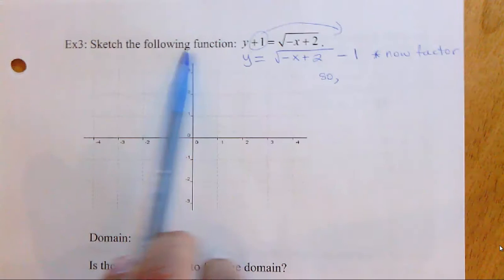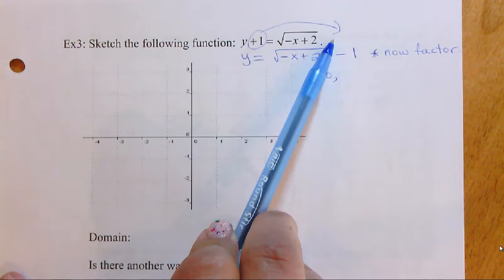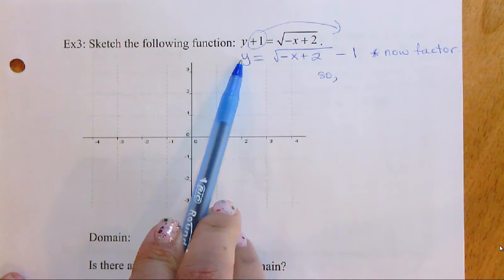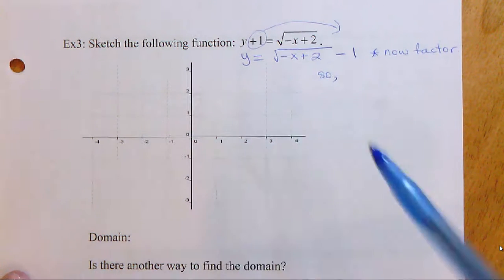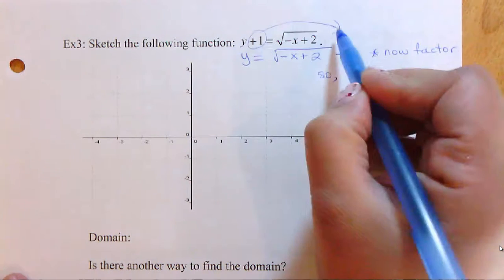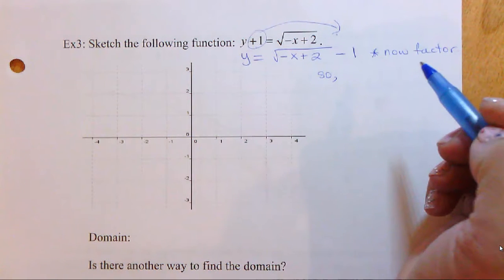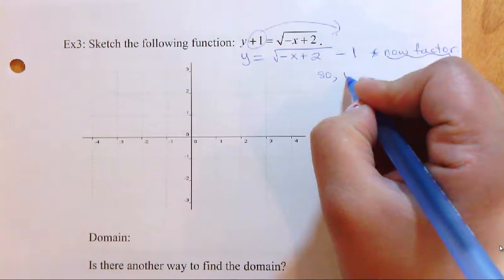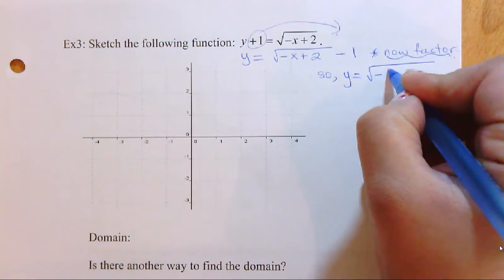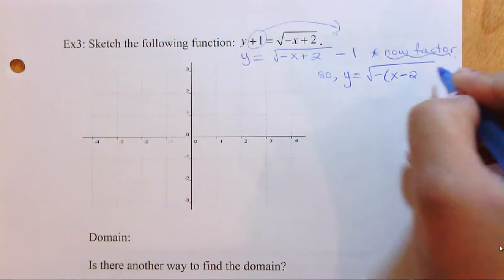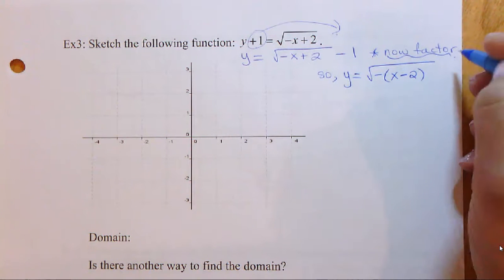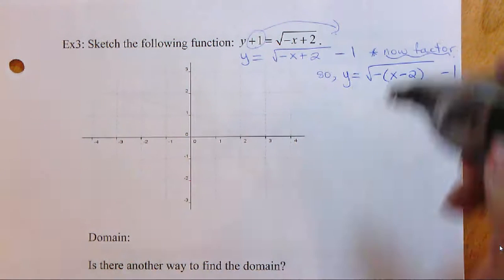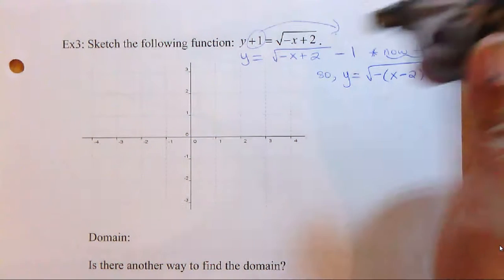For the next example, we're going to sketch a graph by first rearranging so it matches the form we've been working with. Isolate y on one side and move everything else over — subtract 1 from both sides. Once we've done that, factor what's underneath the root sign: we get y equals square root of negative(x minus 2), then minus 1.